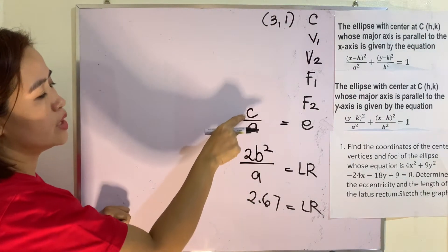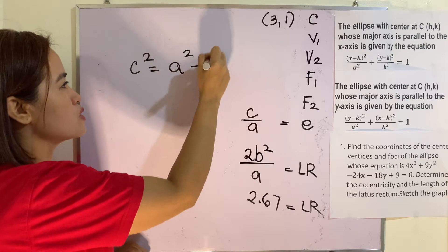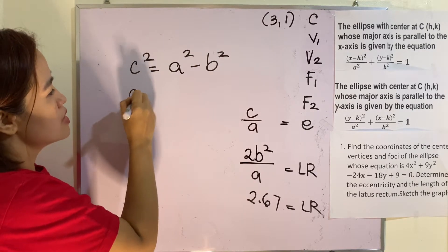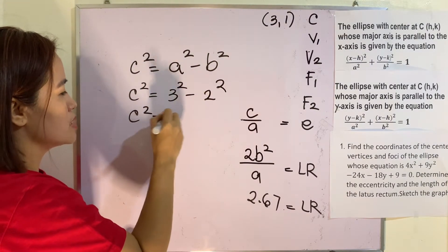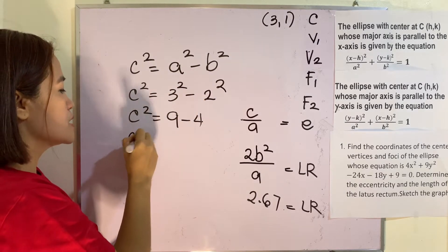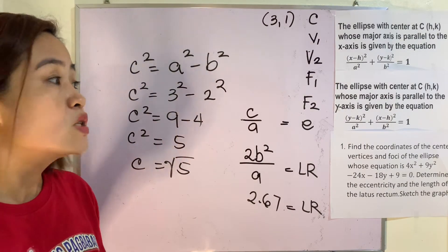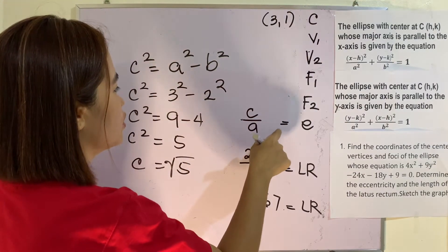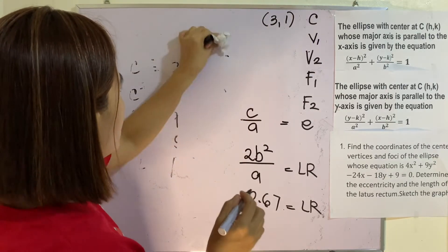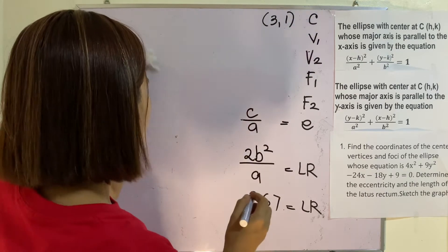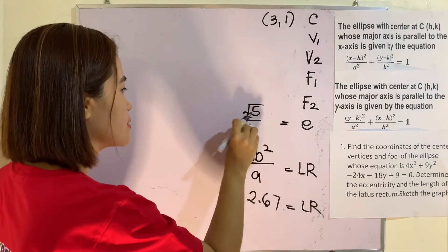How are we going to solve for c so that we can find the eccentricity? We have the formula: c squared equals a squared minus b squared. So c squared equals 3 squared minus 2 squared, which is 9 minus 4, giving c squared equal to 5. Therefore c is equal to the square root of 5, approximately 2.23. The eccentricity is equivalent to square root of 5 over a, where a is 3.